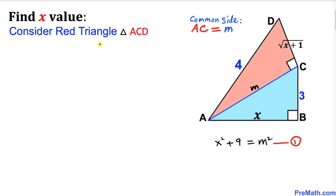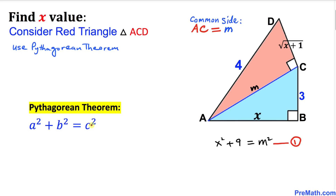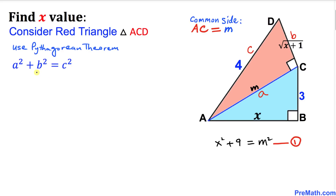Now let's consider the red triangle ACD. We know this triangle is also a right triangle, so we are going to use the Pythagorean theorem again: a² + b² = c². I'll call side AC as a, the other leg as b, and the longest leg as c.